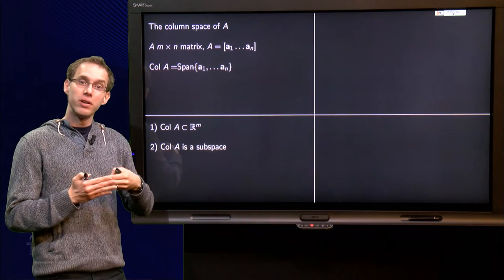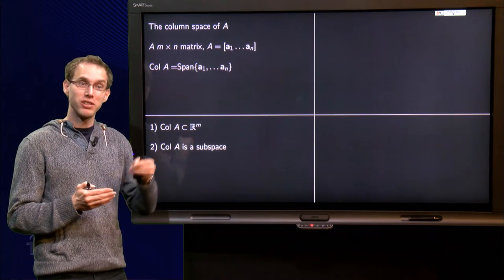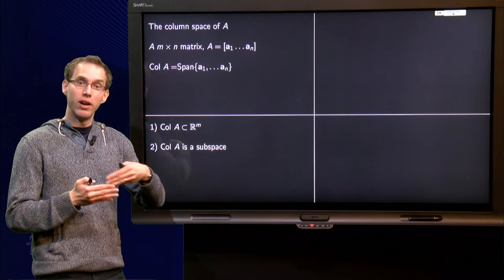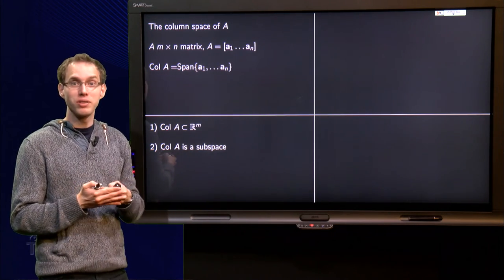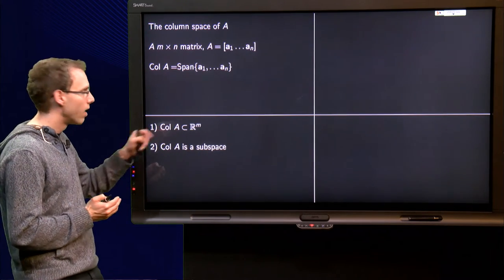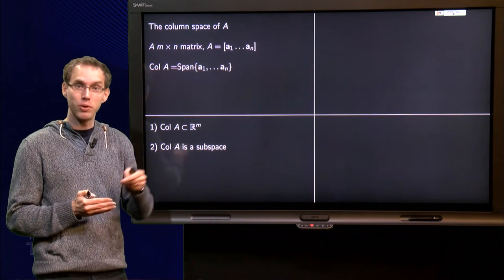So the column space consists of linear combinations of vectors of M components, which means that all vectors themselves contain M components, which means that all vectors in the column space of A are in R^M containing M components.